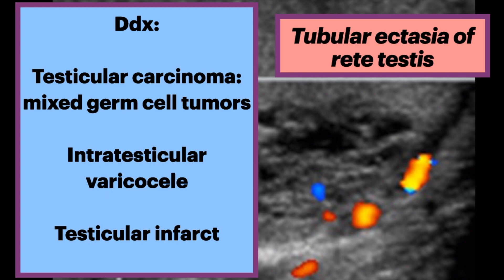The differential includes testicular carcinoma — for example, mixed germ cell tumors with teratomatous components may have cystic areas, so be sure to pay attention for that. Another consideration is an intratesticular varicocele. Lastly, a testicular infarct would present as an avascular wedge-shaped area with sharp borders.